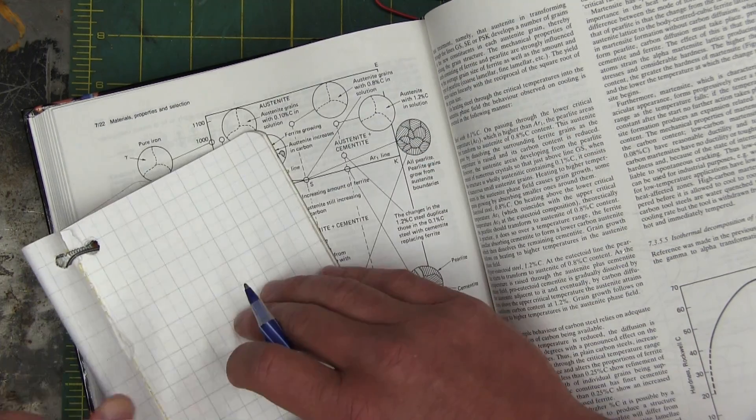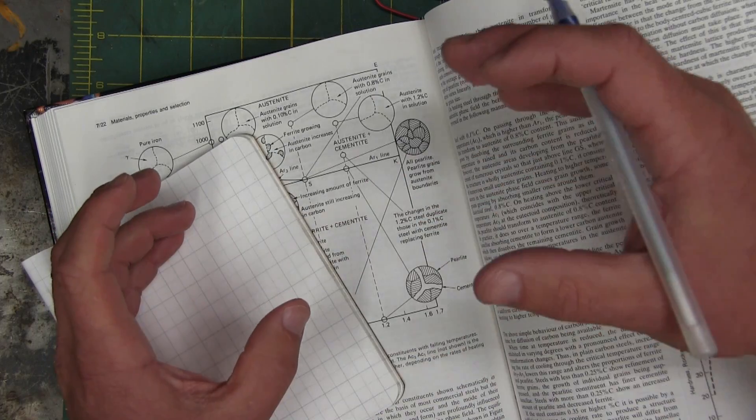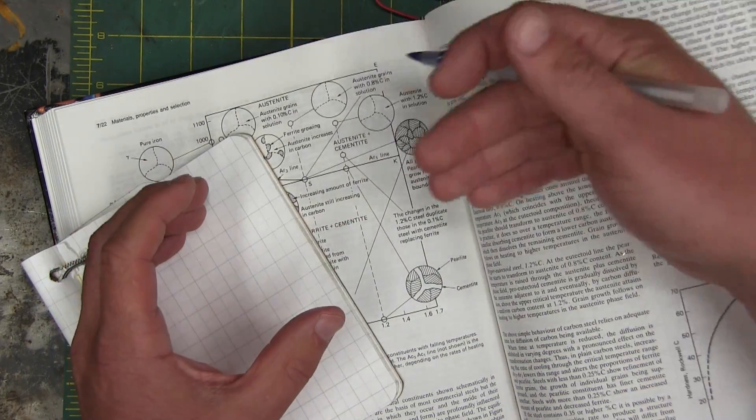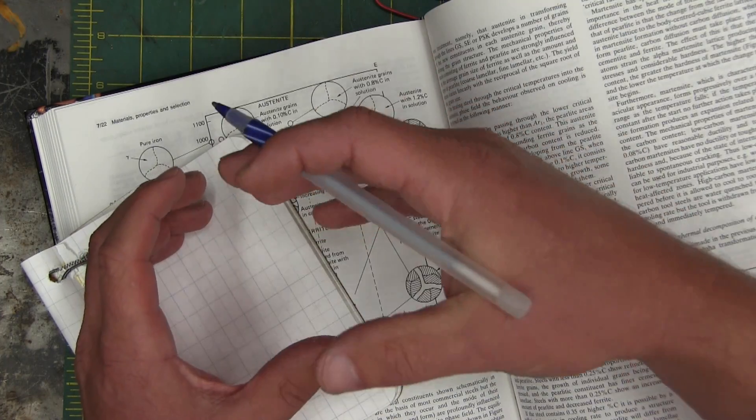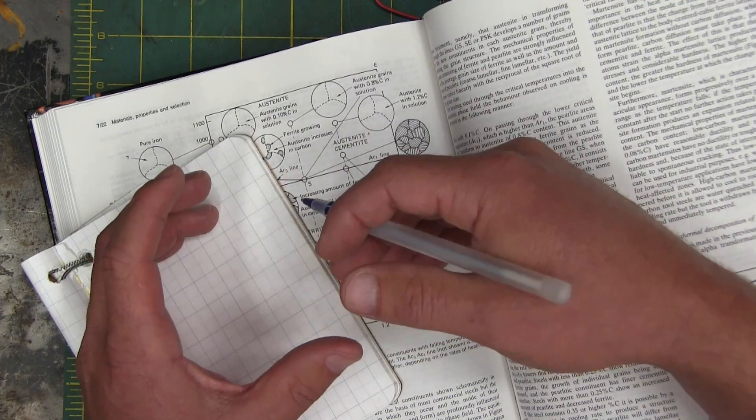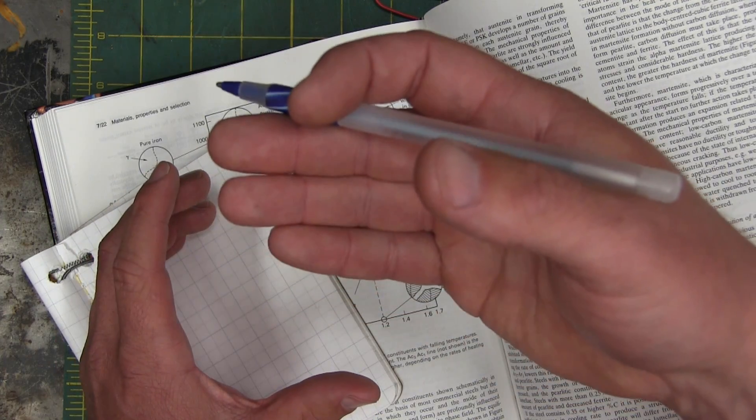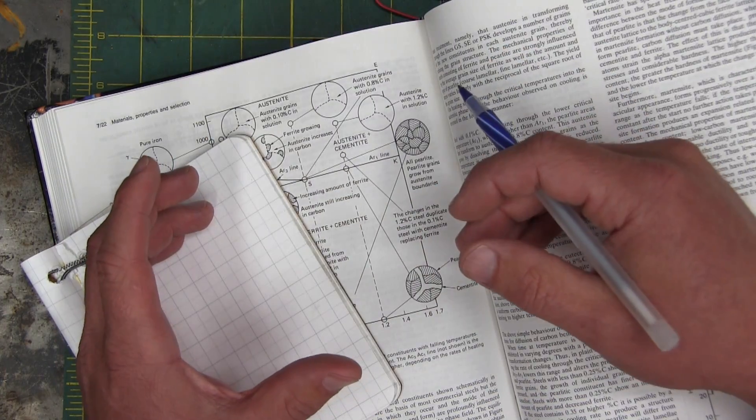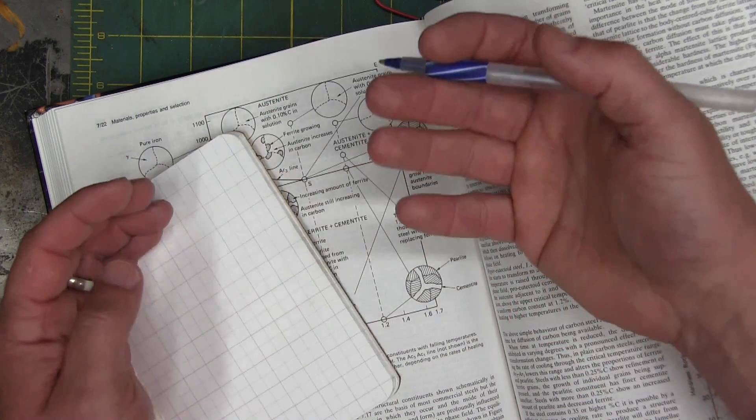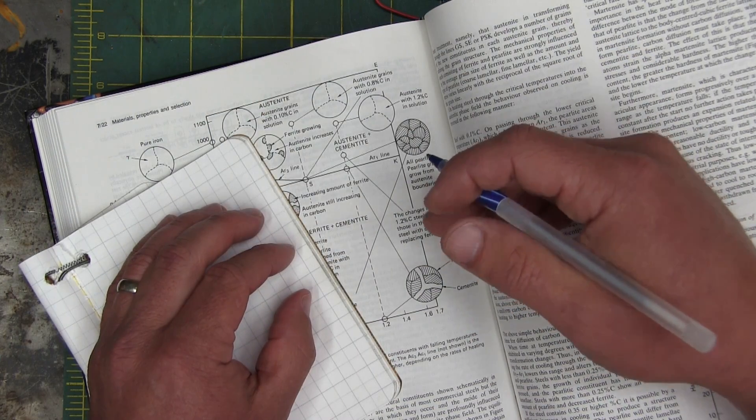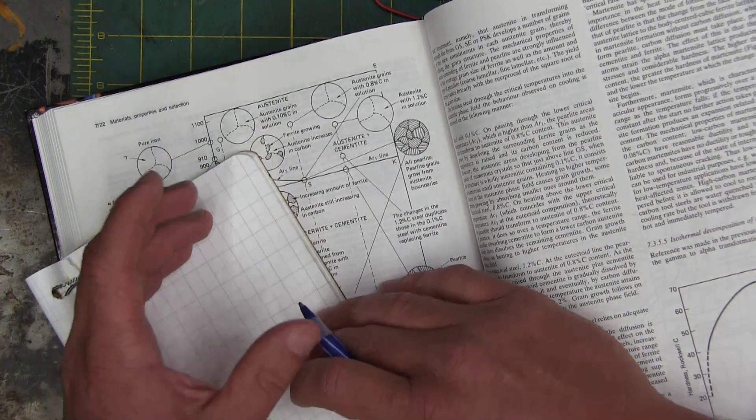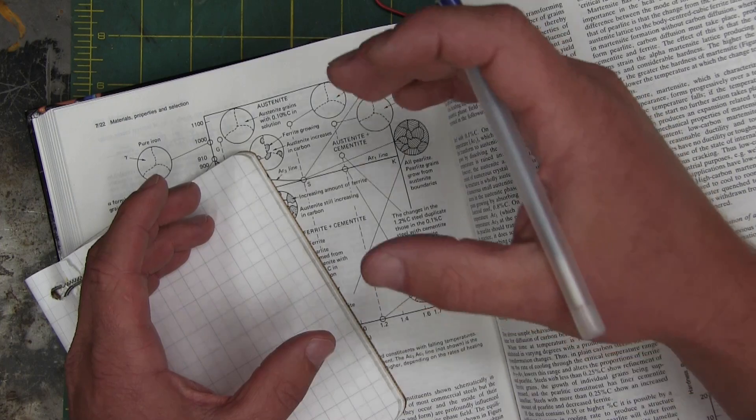The analog is you have a glass of water and you have salt. You add salt to the water, you mix it in, it dilutes. You add more salt, more salt, more salt. Eventually, that solution can't take any more salt. If you want to put more salt in the water, what do you do? You heat it up. And now you can put in more salt. But as it cools back down, the salt comes out of solution. So the iron is the water and the carbon is the salt.